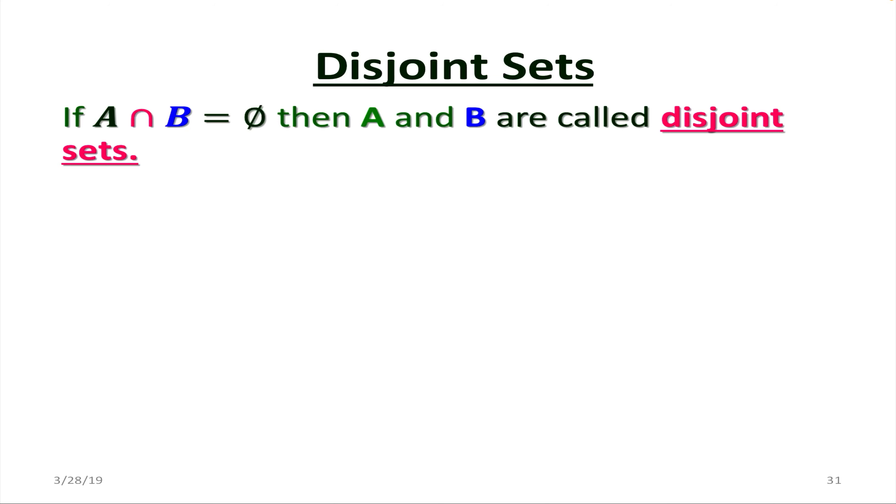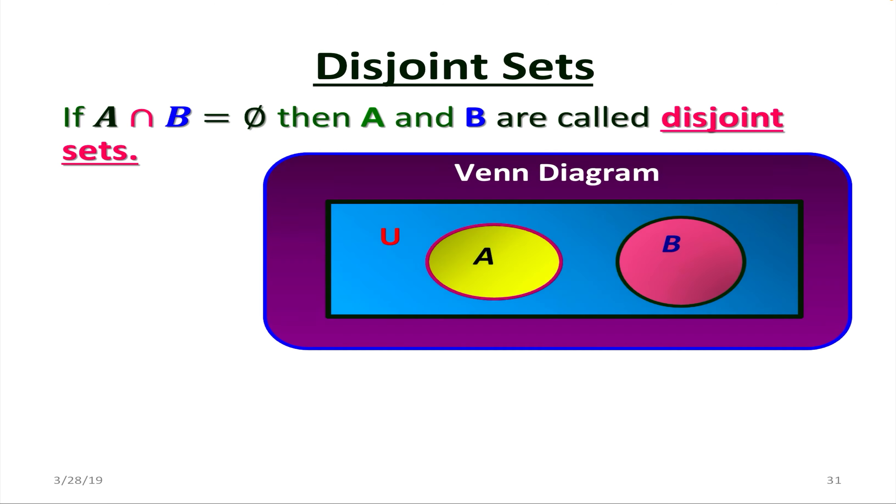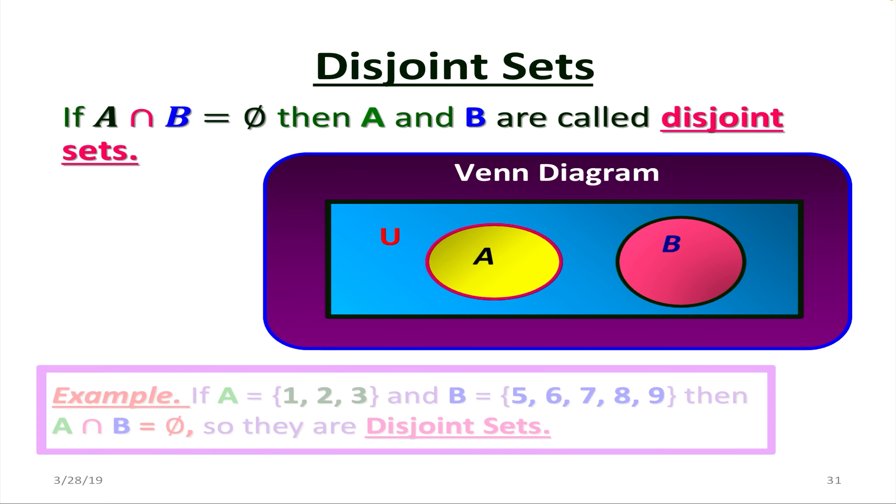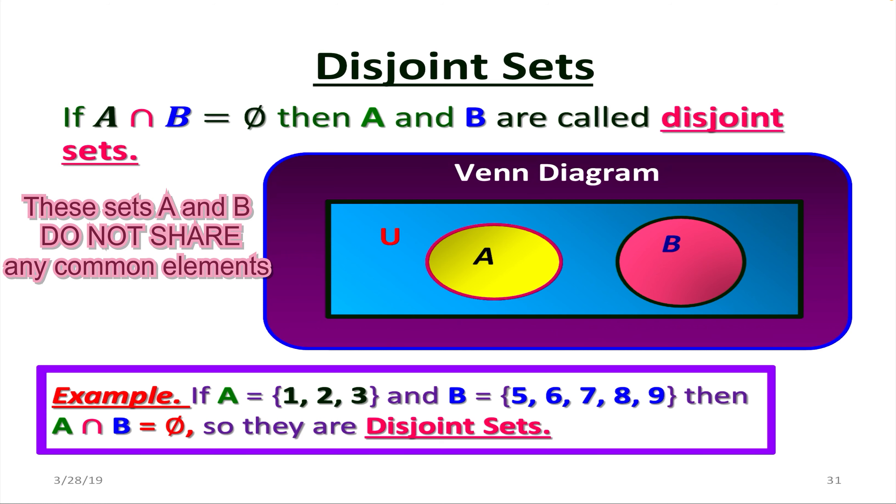Now disjoint sets. So if A intersect B is an empty set, then A and B are called disjoint sets. So when it comes to Venn diagram, there is no overlapping common part in these two sets.